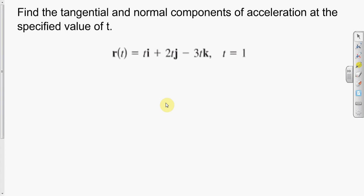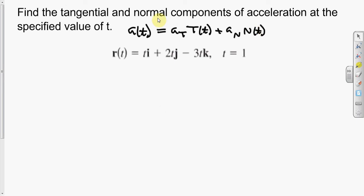We want to finish section 12.4, and here we want to find the tangential and the normal components of acceleration — that is, to find a sub T and a sub N. The acceleration has the formula: acceleration equals a sub T times the tangent vector plus a sub N times the normal vector. We seek to find a sub T, the tangential component of acceleration, and also the centripetal or normal component of acceleration, a sub N.